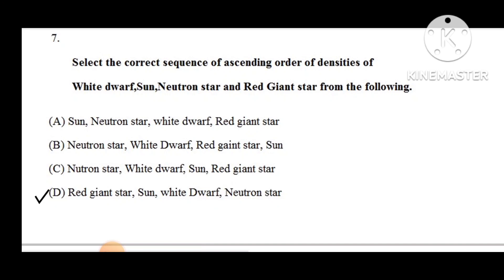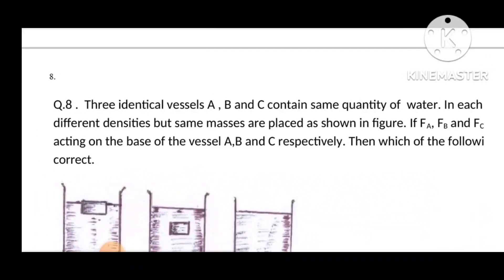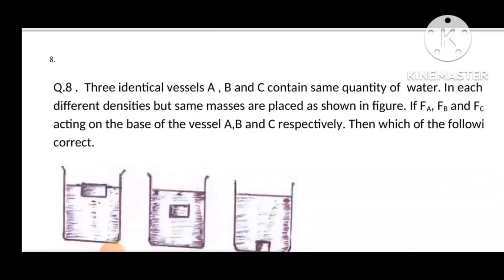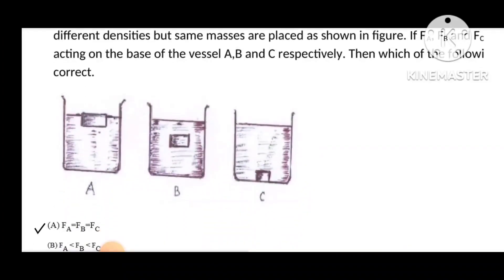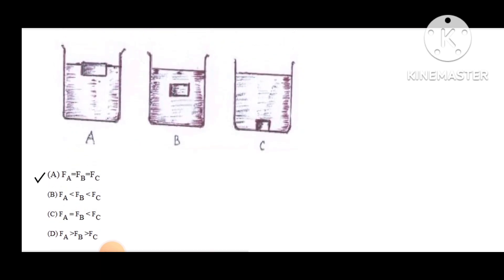Question number 7: Select the correct sequence of ascending order of densities of white dwarf, sun, neutron star, and red giant star from the following. Option D is the correct option. Question number 8: Three identical vessels A, B, and C contain the same quantity of water but objects of different densities and the same masses are placed as shown in the figure. If FA, FB, and FC are forces acting on the base of vessels A, B, and C respectively, the correct option is A: FA equals FB equals FC.